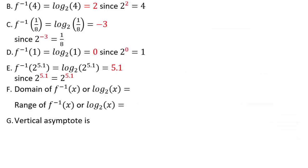Let's take a look at the answers. For part a — the inverse function of 2 to the power x — you get log base 2 of x. For f inverse of 4: since 2 squared is 4, log base 2 of 4 equals 2. f inverse of 1 over 8 is negative 3, because 2 to the negative 3 is one-eighth. f inverse of 1 — log base 2 of 1 — is 0. And f inverse of 2 to the power 5.1 is 5.1, because we're looking for 2 to what power gives 2 to the 5.1.